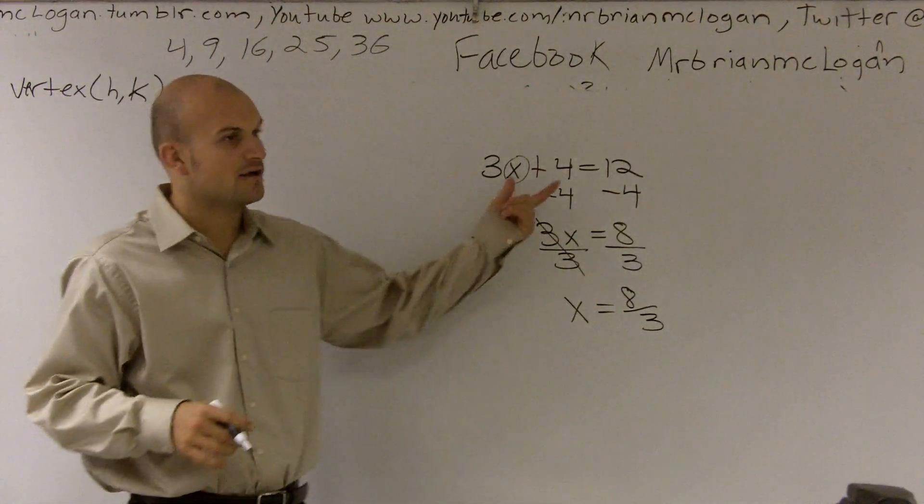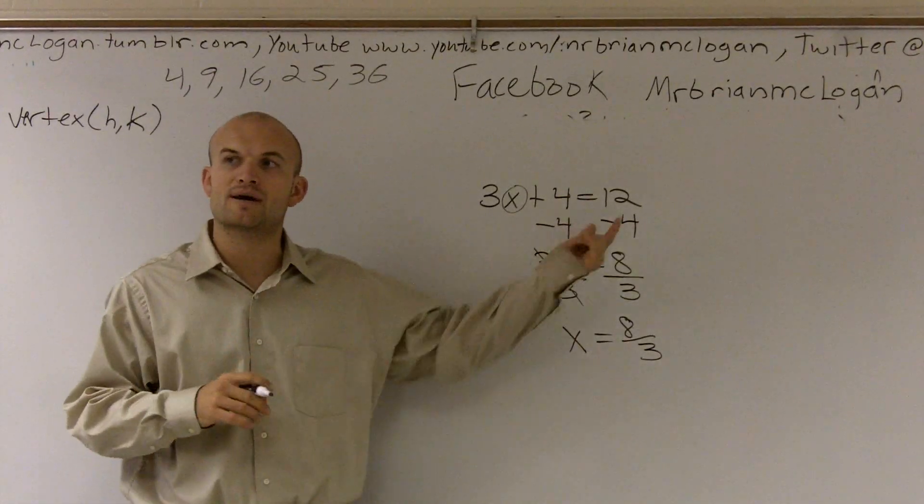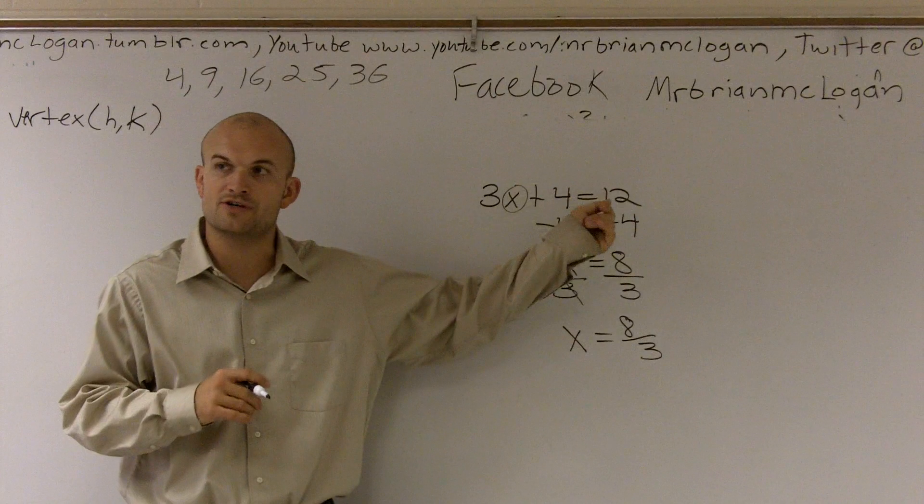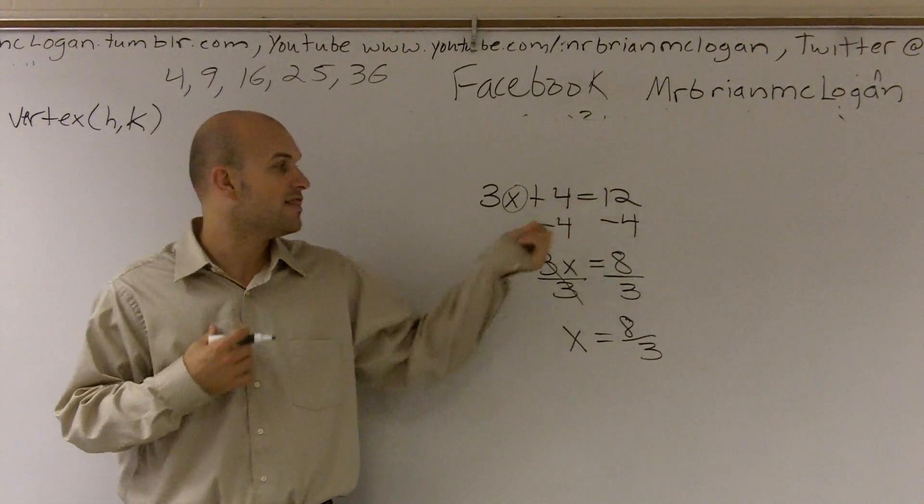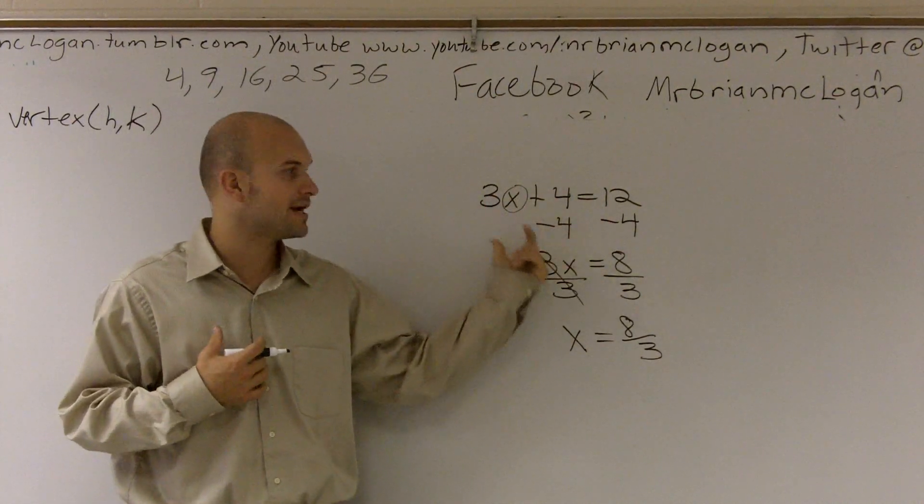And that is how you solve a two-step equation. Just remember to always undo addition and subtraction first by inverse operations, then undo multiplication and division by inverse operations.